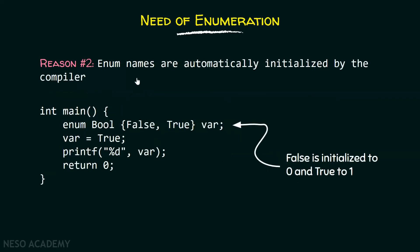The second reason is that enum names are automatically initialized by the compiler. We know that false will get value zero and true will get value one. Hence, automatic initialization is a very good feature which helps us in using enums in our programs.